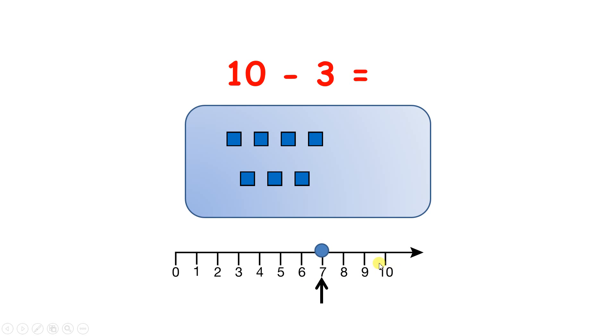And you can see that my number line has given me the answer here, because if I count up how many blocks I have left, I've got 1, 2, 3, 4, 5, 6, 7. So 10 take away 3 is 7.